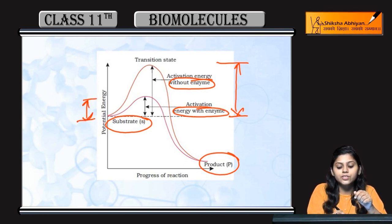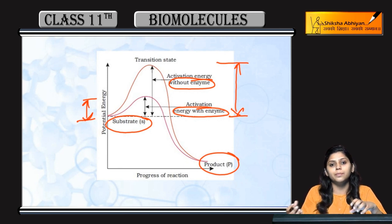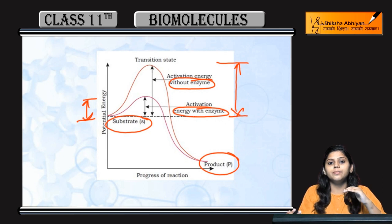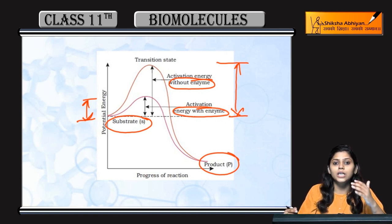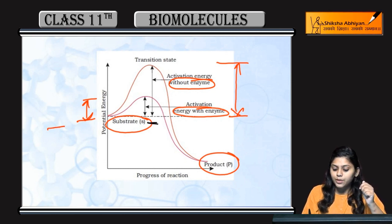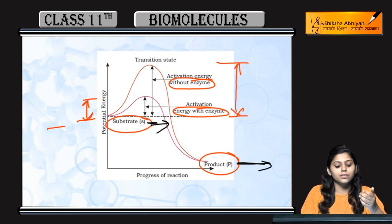If we look at the energy of the substrate and the product, what does the enzyme do? The enzyme reduces the activation energy so the reaction proceeds easily and quickly. If the substrate's position is higher compared to the product's position, then this is an exothermic reaction.